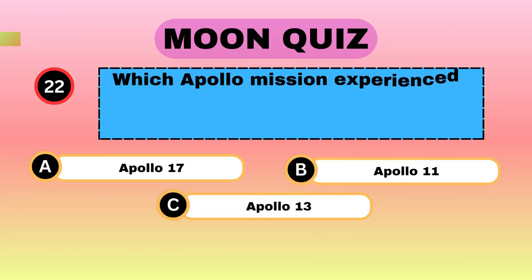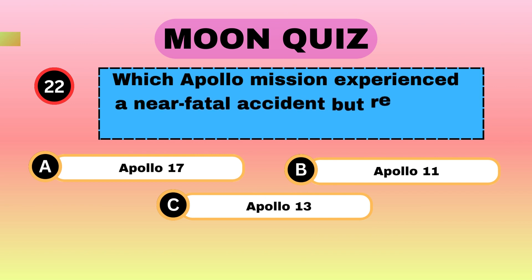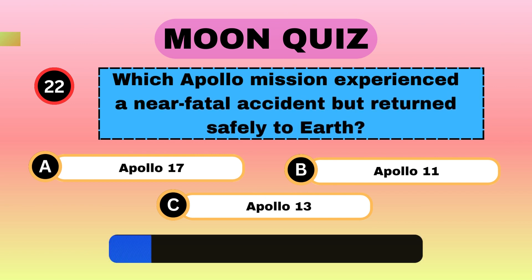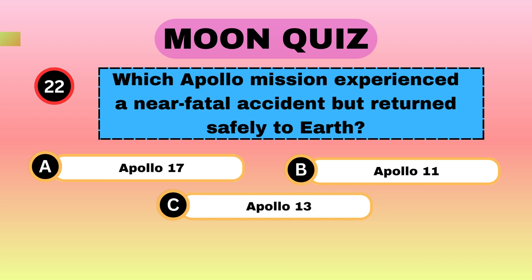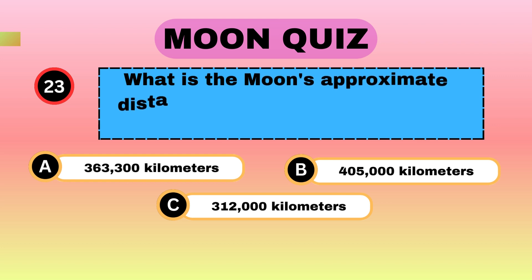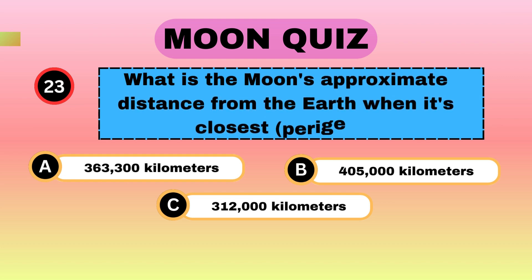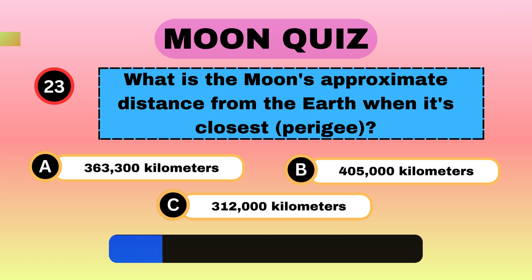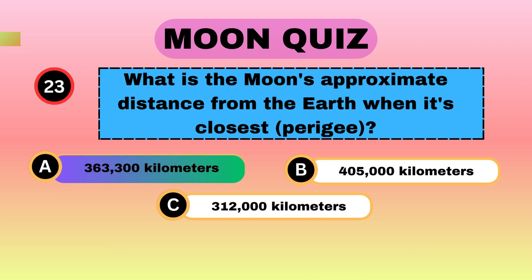Which Apollo mission experienced a near-fatal accident but returned safely to Earth? Apollo 13. What is the Moon's approximate distance from the Earth when it's closest, at perigee? 360,363,300 kilometers.